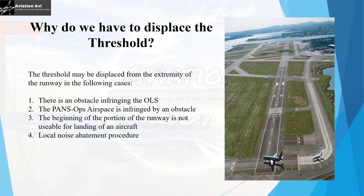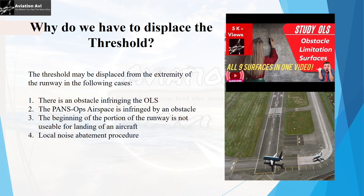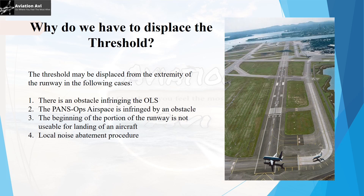The first question is: why do we have to displace the threshold? The threshold may be displaced from the extremity of the runway in the following cases. First, when there is an obstacle infringing the obstacle limitation surface. To understand what obstacle limitation surface means, refer to our video, the link of which will be given in the description, where we describe all nine surfaces in detail.